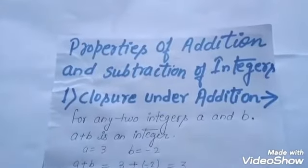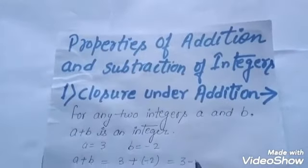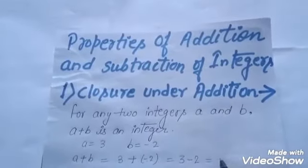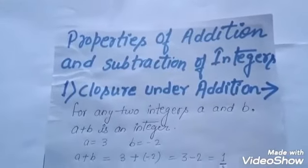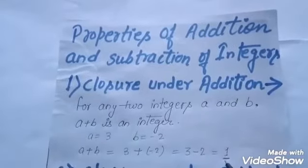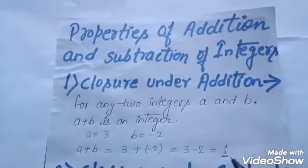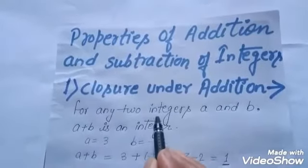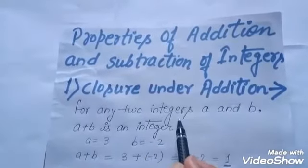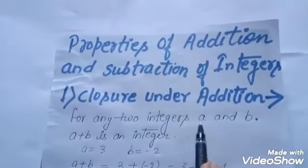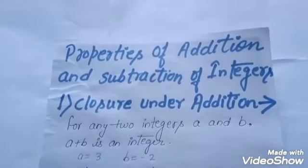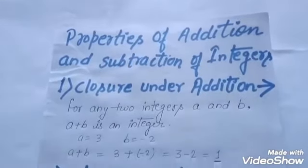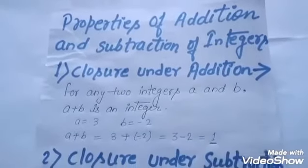Three plus minus two equals three minus two, which is one. One is also an integer. So if two numbers are integers, then their sum is also an integer. Now the second property: closure under subtraction.